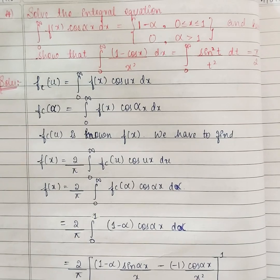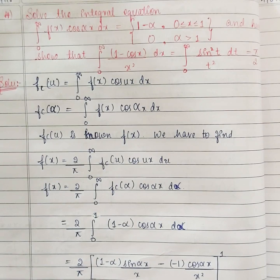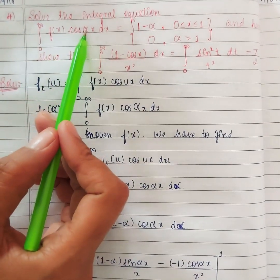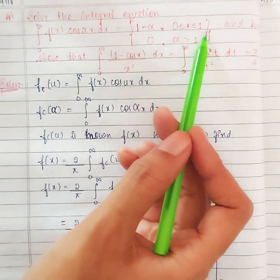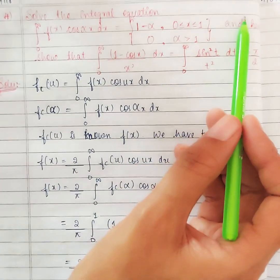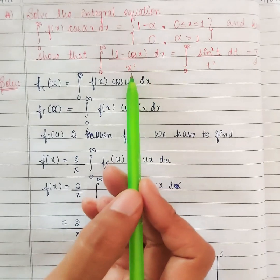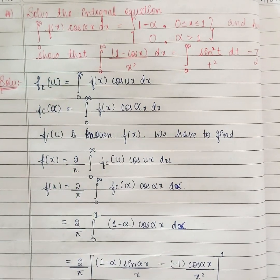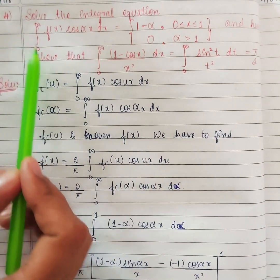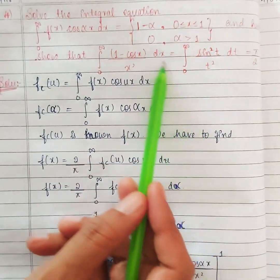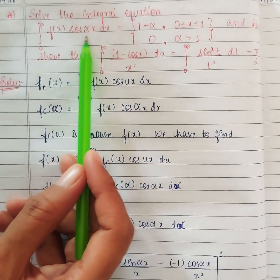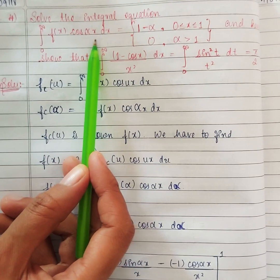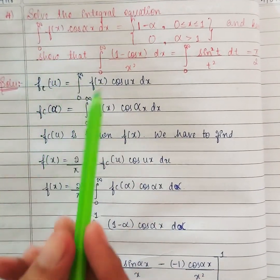We will see one more problem. If you see this question: solve the integral equation — that is integral 0 to infinity f of x cos alpha x dx equals 1 minus alpha in the interval 0 to 1, and 0 if alpha greater than 1. And hence show that integral 0 to infinity 1 minus cos x by x square dx equals pi by 2. They did not mention Fourier sine or cosine transform — nothing. So what is given? If you see, integral 0 to infinity f of x cos alpha x — your right hand side is in terms of alpha — since cos alpha x is there, this is which formula? This is a Fourier cosine transform. They have given this as fc of alpha.